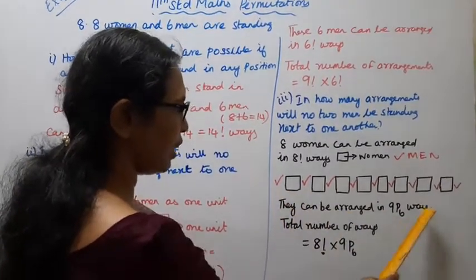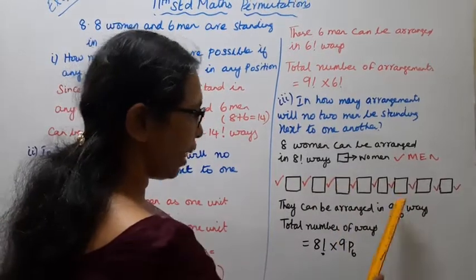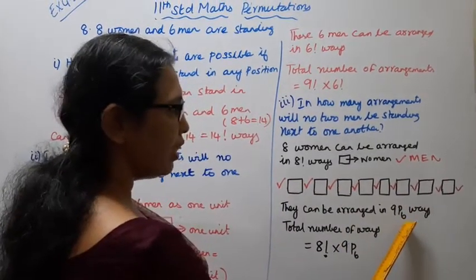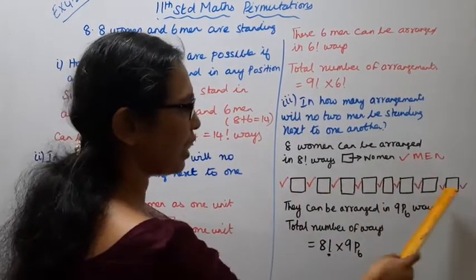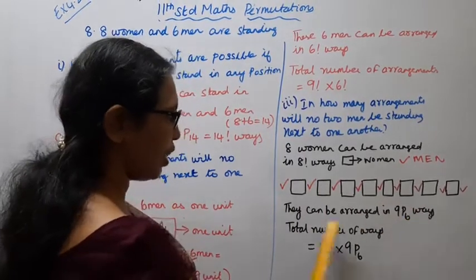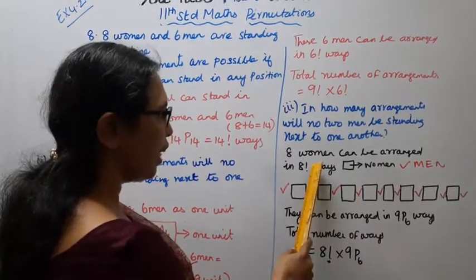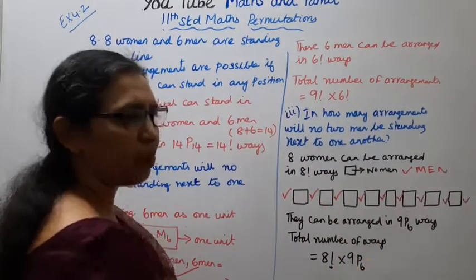Men can be arranged in 9P6. 6 men, how many ways? 9P6 ways. Total number of ways: 8 factorial into 9P6.